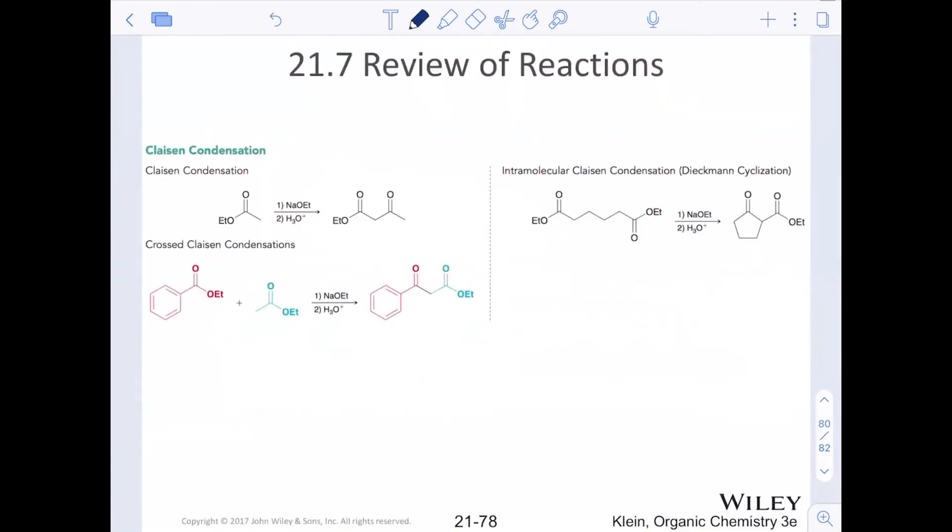Claisen condensation reactions were important. They were looking at the ester functional group instead of aldehydes or ketones this time. We saw peppering in there the idea of acyl substitution reactions from chapter 20 where we saw the tetrahedral intermediate form and then the loss of the ethoxide leaving group for our ester.